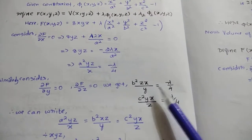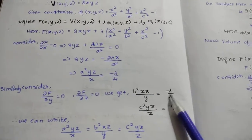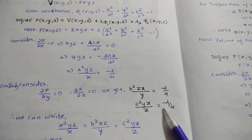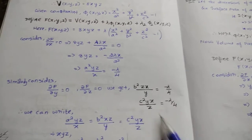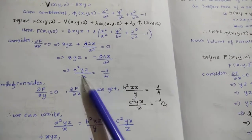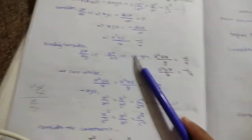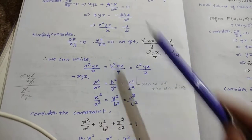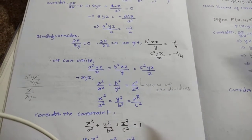From the three partial derivative equations we get: −λ/4 equals a certain expression from x, −λ/4 equals a certain expression from y, and −λ/4 equals a certain expression from z. Since all three are equal to −λ/4, we equate them to each other.